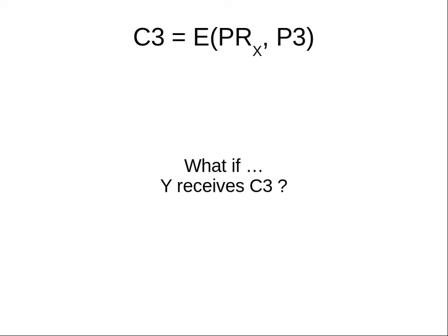So what else does Y know? Y can get the message P3, and they also know who sent it. Because if it successfully decrypts with the public key of X, it must have been encrypted with the private key of X, and therefore it must have been sent by X — since only X has the private key of X. So Y knows the message and knows it came from X. This is a form of authentication. Similarly, Z also knows P3 and knows it came from X.